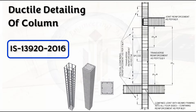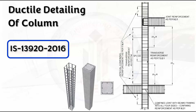Welcome back to Civil Engineering Mastery. The column is one of the most important structural members since it carries the loads of the floors above. It is the structural engineer's responsibility to design and detail the column properly to ensure it will not collapse under lateral forces. Ductile detailing plays a major role in preventing column collapse when subjected to lateral forces. In this video, let's discuss why we provide ductile detailing and the important factors to consider as per IS 13920-2016.